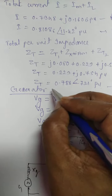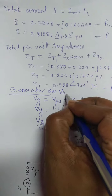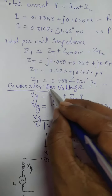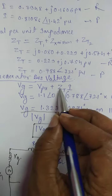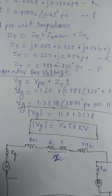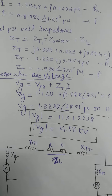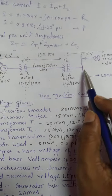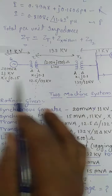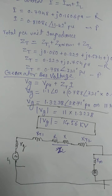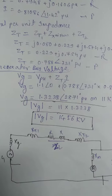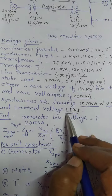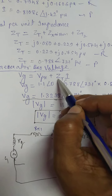Our main aim is to find the generator bus voltage. VG equals VPU plus ZT times I, where ZT times I is the voltage drop in that particular region. The bus where you have to find out the voltage is the generator bus. The generator bus voltage consists of the per-unit terminal voltage, which is given as 1.1, plus the voltage drop ZT times I.